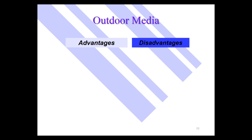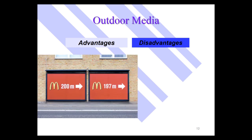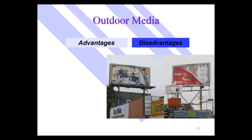Outdoor advertising — an advantage is you can be very close to where your business is. Here's an example: a McDonald's outdoor ad that says '200 meters from here' and then '197 meters from here.' Pretty clever. Disadvantage? A lot of people hate outdoor and they hate the eyesore component of it.